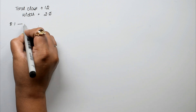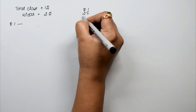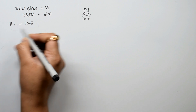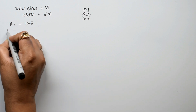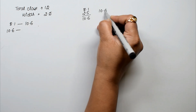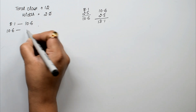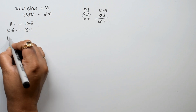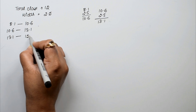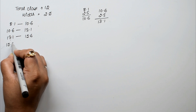Starting at 8.1, we add 2.5: 8.1 + 2.5 = 10.6. So the first class boundary end is 10.6. Then 10.6 + 2.5 = 13.1. From 13.1, add 2.5 again to get 15.6. We keep adding 2.5 successively to find each class boundary.